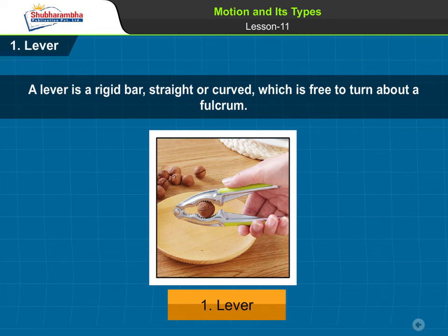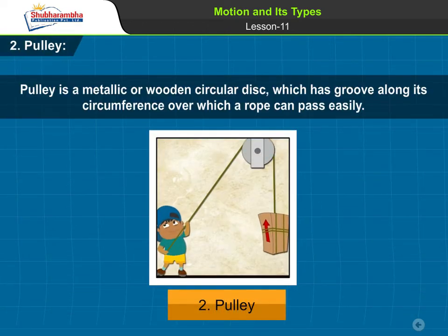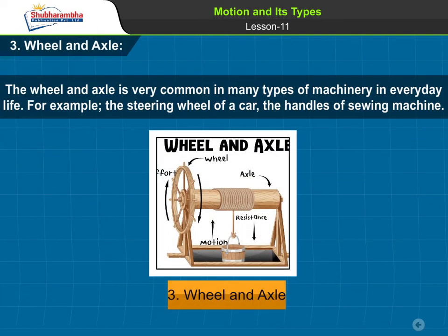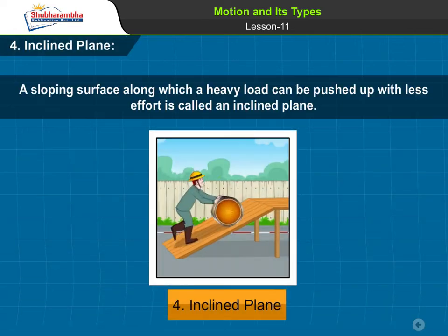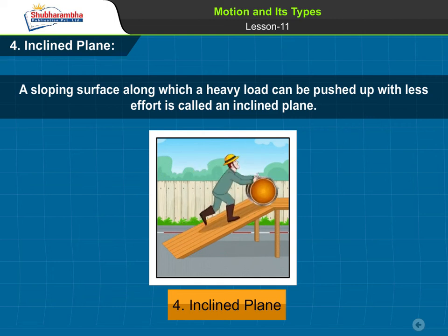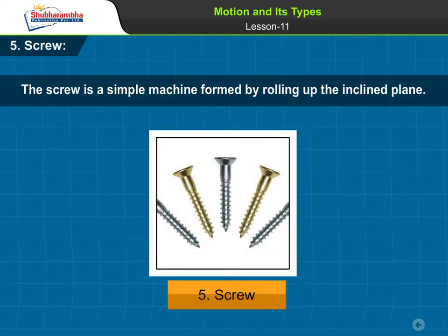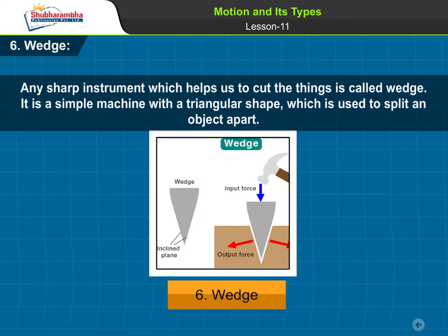A lever is a rigid bar, straight or curved, which is free to turn about a fulcrum. A pulley is a metallic or wooden circular disc which has a groove along its circumference over which a rope can pass easily. The wheel and axle is very common in many types of machinery — for example, the steering wheel of a car and the handles of a sewing machine. An inclined plane is a sloping surface along which a heavy load can be pushed up with less effort. The screw is a simple machine formed by rolling up an inclined plane. The sixth type is the Wedge.